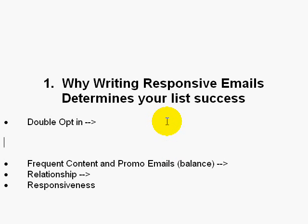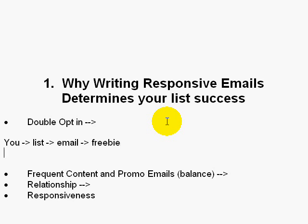So let's say for example you are the new subscriber and you sign up onto a list. With double opt-in, you have to go to your email address and confirm that you are the actual owner of that email address, and then you get your freebie — whether it's a newsletter, tips, free ebook, free software, whatever. That's what double opt-in is. I recommend it because the people who go through and confirm it are willing to take that necessary step to actually get their freebie.